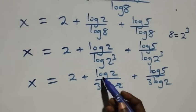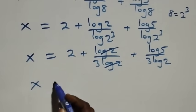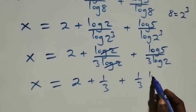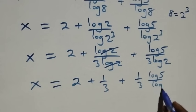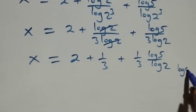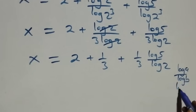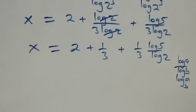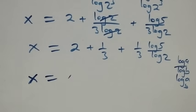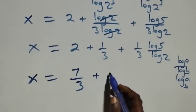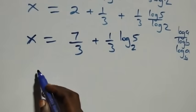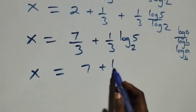Here log 2 cancels each other, leaving 1 over 3. So x equals to 2 plus 1 over 3 plus 1 over 3 times log 5 over log 2. Applying the change of base rule, log a over log b is the same as log a to base b. So x equals to 2 plus 1 over 3, which is 7 over 3, plus 1 over 3 log 5 to base 2. Since 3 is common, we write this as 7 plus log 5 base 2, all over 3.